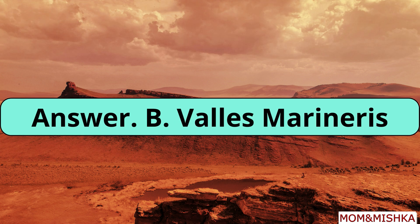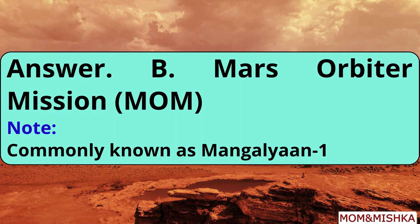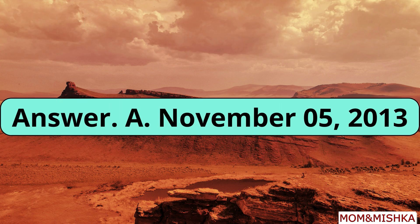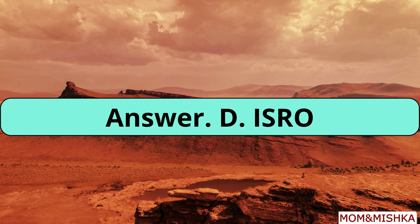Valles Marineris is the largest canyon in the solar system. India's first Mars mission was the Mars Orbiter Mission, commonly known as Mangalyaan. It was launched on 5th November 2013. The mission was launched by ISRO.